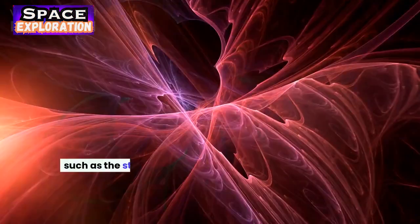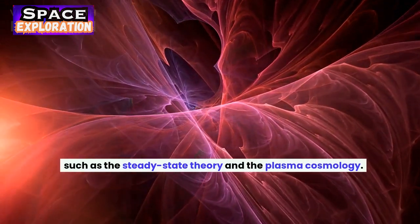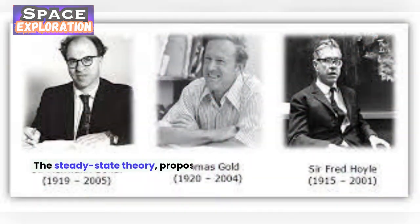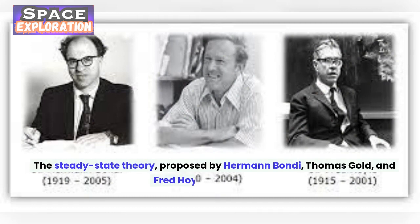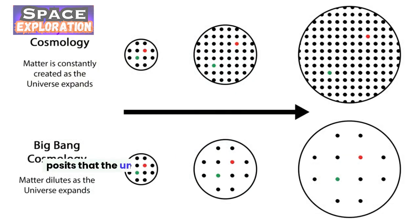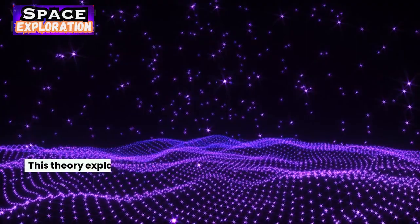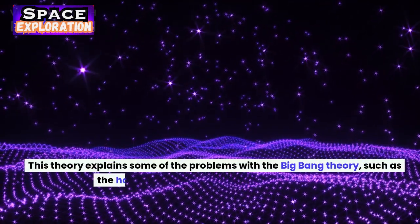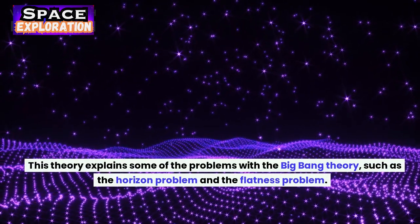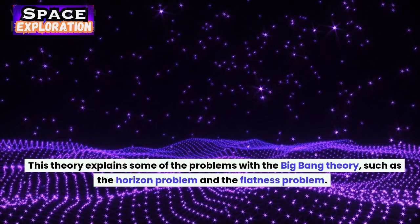Such as the steady-state theory and the plasma cosmology. The steady-state theory proposed by Herman Bondi, Thomas Gold, and Fred Hoyle in the 1940s posits that the universe has always existed and will continue to exist infinitely into the future. This theory explains some of the problems with the Big Bang Theory, such as the horizon problem and the flatness problem.